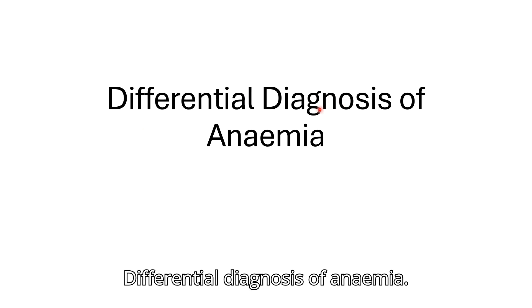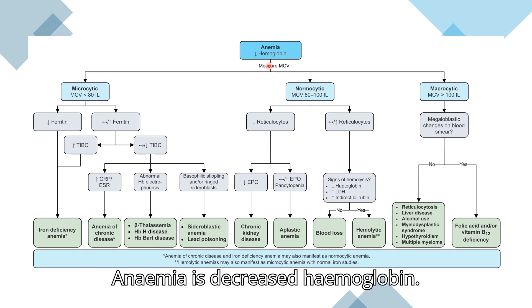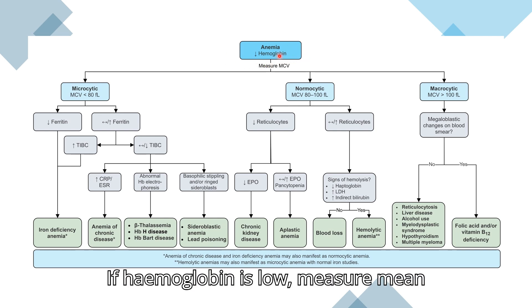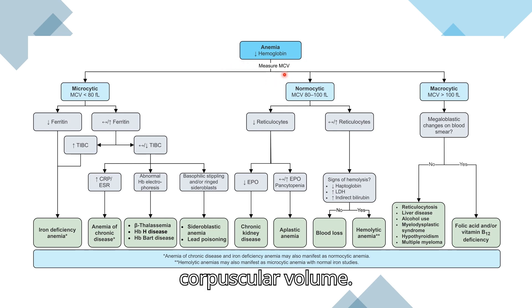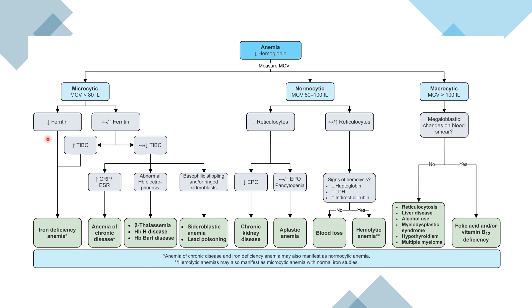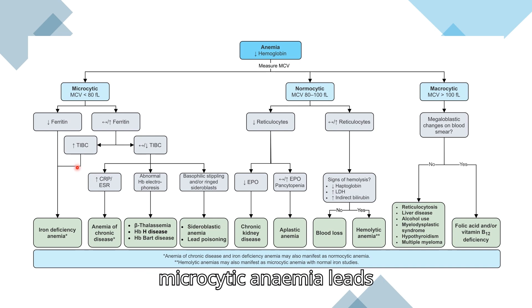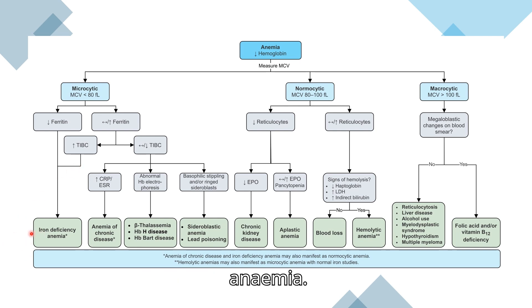Differential diagnosis of anemia. Anemia is decreased hemoglobin. If hemoglobin is low, check mean corpuscular volume (MCV). If MCV is less than 80 femtolitres, that is microcytic anemia. Decreased ferritin and increased total iron binding capacity in microcytic anemia leads to a diagnosis of iron deficiency anemia.